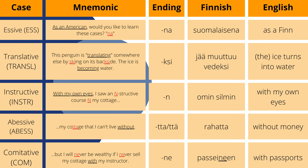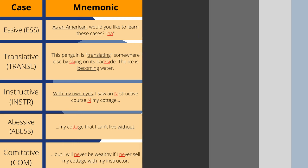Let's review the five marginal cases. The essive case has the basic meaning of 'being.' The example is suomalaisena, meaning 'as a Finn.' The translative case has the basic meaning of a change of state. An example is jää muuttuu vedeksi, meaning 'the ice turns into water.' The instructive case has the basic meaning of 'by means of.' The example is omin silmin, which means 'with my own eyes.' The abessive case has the basic meaning of 'without.' The example is rahatta, meaning 'without money.' The comitative case has the basic meaning of 'in company of' or 'together with.' The example is passeineen, meaning 'with passports.'